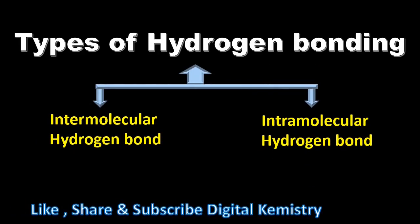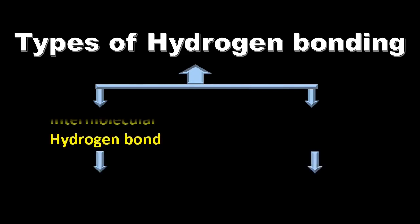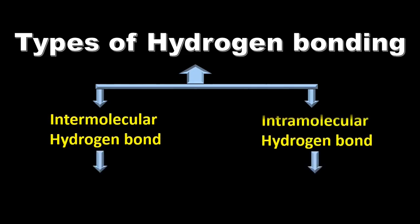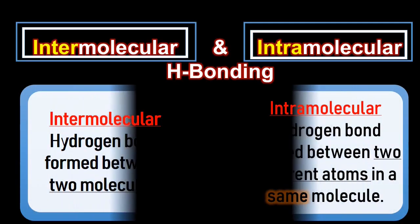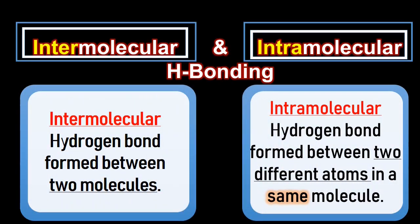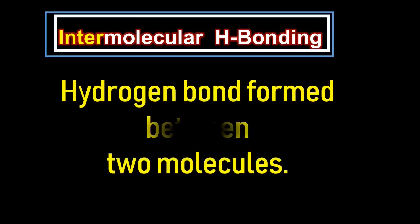Types of hydrogen bonding — hydrogen bonding को two types में divide किया गया है। First है intermolecular hydrogen bonding और second है intramolecular hydrogen bonding। Intermolecular hydrogen bonds formed between two molecules, whereas intramolecular hydrogen bonds formed between different atoms in the same molecule.